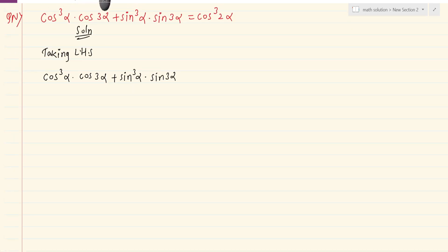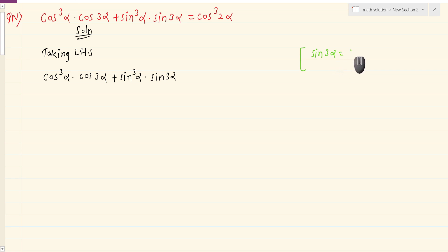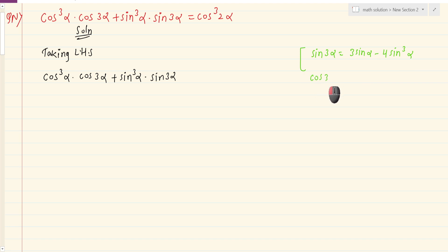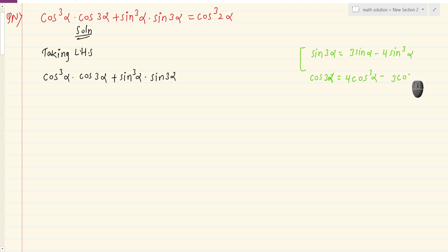I will write the formulas on the right side. Sin 3a equals 3 sin a minus 4 sin cube a. Then cos 3a equals 4 cos cube alpha minus 3 cos alpha.